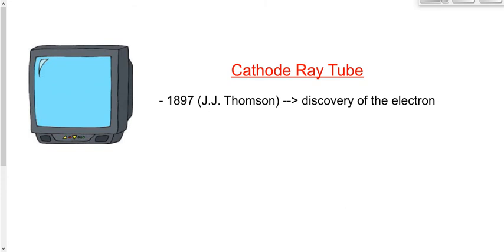Prior to the 20th century, the atom was the atom. There were different kinds of atoms — you could have this kind or that kind — but we didn't break them down into smaller things like protons, neutrons, and electrons like we do today.